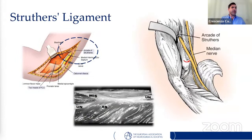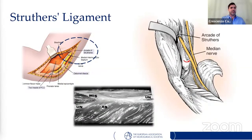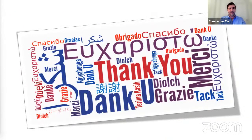Another important compression site is the arcade of Struthers — an aponeurotic band connecting the medial intermuscular septum to the medial head of the triceps. Its clinical significance relates to the median nerve and brachial artery passing beneath the arc formed by this ligament over the humeral body. This ligament may also affect the ulnar nerve after anterior transposition surgery. It is unlikely to affect the ulnar nerve in patients without prior transposition surgery. That covers the anatomical overview.